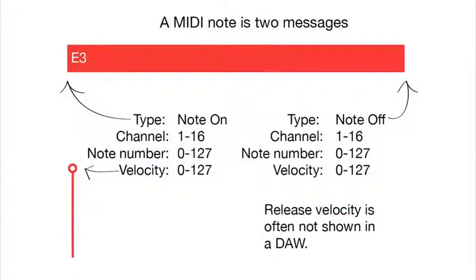Now a message is sent when you hold down the key. When I release the key, a second message is sent, which is a note off message. That will also include the channel and which note it is as a specific number. It also includes a velocity, which is release velocity, how fast you let go of the key.